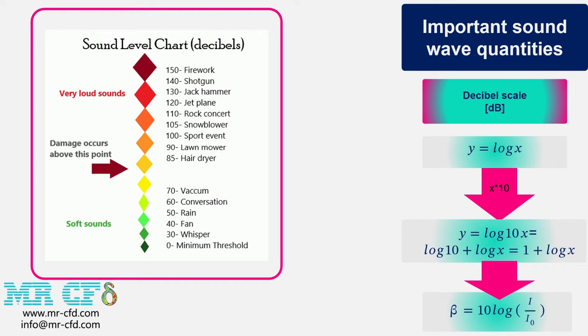So with logarithmic representation, if we multiply x or sound intensity here by 10 to the power of 12, y will increase by only 12 units. For this reason, it is better to use a new concept called sound level instead of sound intensity that changes in a wide range. Sound level is defined as given in the last relation of this slide.